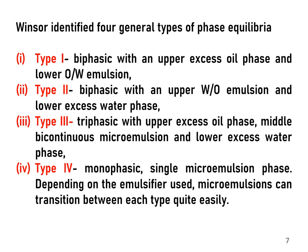We will now look at the different types of microemulsions based on the phase equilibria that is obtained. Winsor in 1948 identified four types of microemulsions. Type 1 is biphasic, which has an upper excess oil phase and a lower microemulsion phase. Type 2 is again biphasic with an upper microemulsion phase and a lower excess water phase. Type 3 is triphasic where there are three phases: upper excess oil phase, middle microemulsion, and lower excess water phase. Type 4 is a monophasic microemulsion formulation.